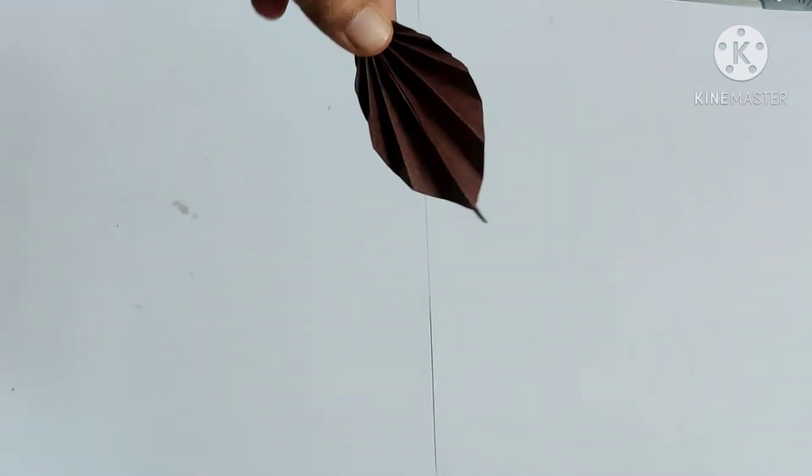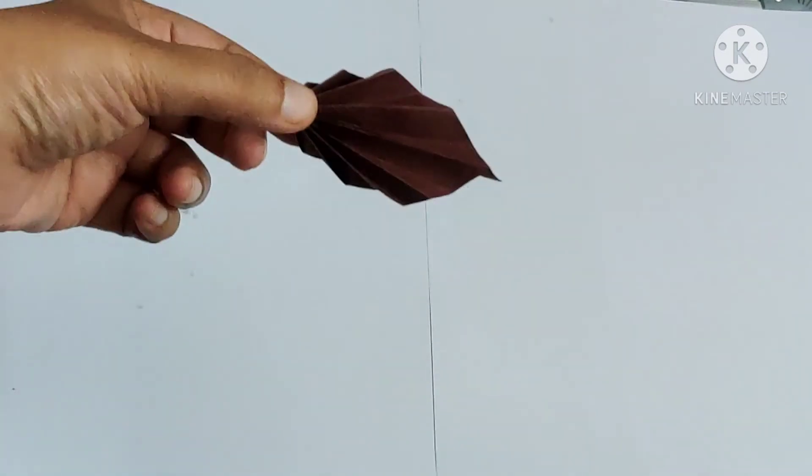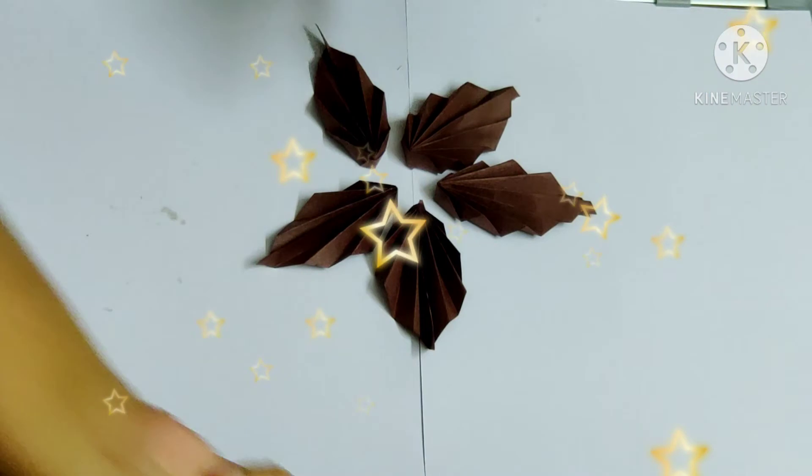Now this has turned into a shape of the leaf. I'm going to turn this into a flower. We need to make five pieces like this.